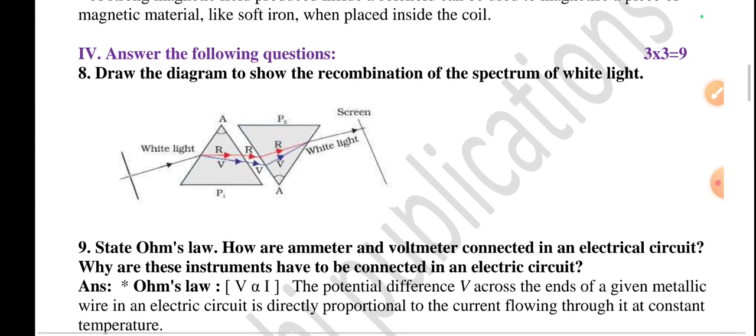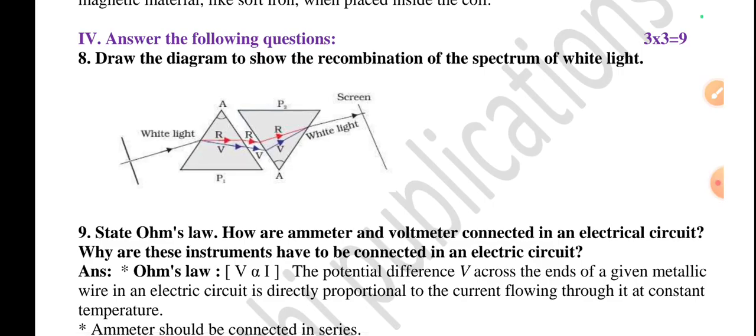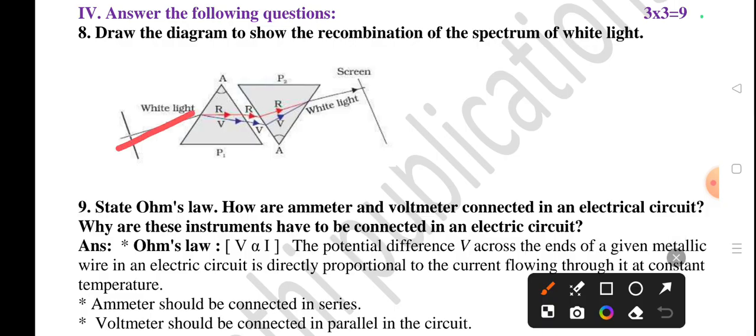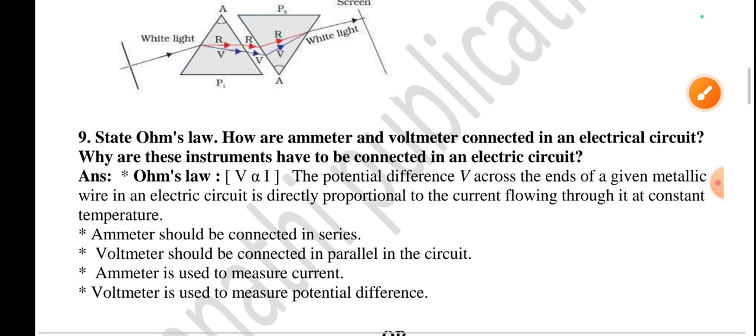Question number four section: Answer the following questions. Three mark questions, total three questions are given, three times three is nine. Then this is the diagram - a ray of light is passed to the prism, then it undergoes refraction. Because of refraction, diffraction also occurs. Several colors split, and those diffracted colors are again passed through an inverted prism. If we pass, we again get a composite light. This is the process we have to explain a little bit.